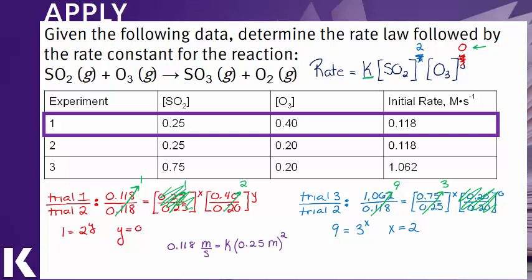This is what we get. And with a little bit of algebraic rearrangement, we can solve for k of 1.9 molar to the negative one second to the negative one, which is also consistent with a second order reaction.